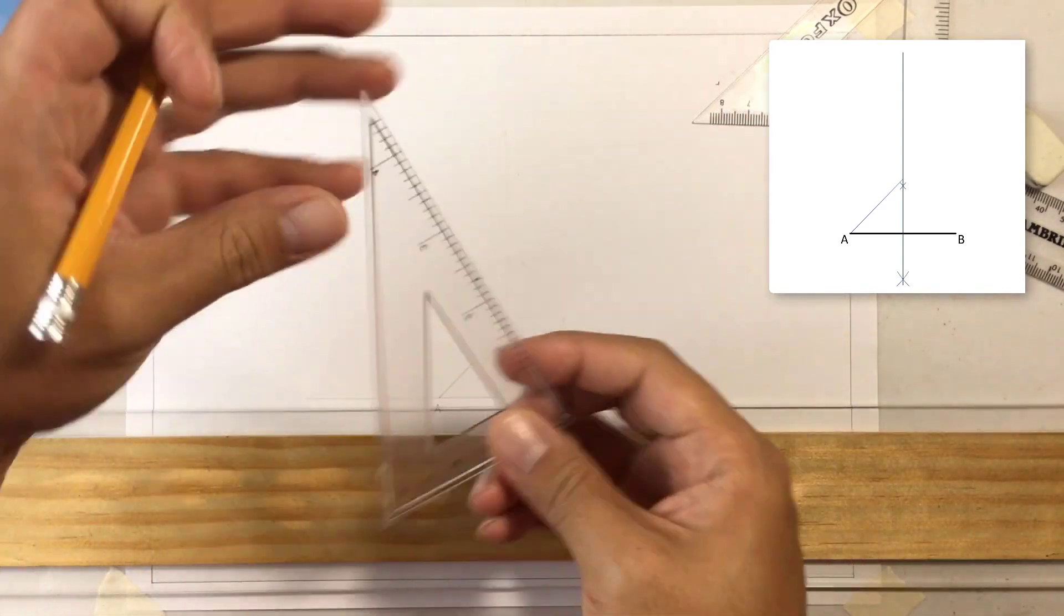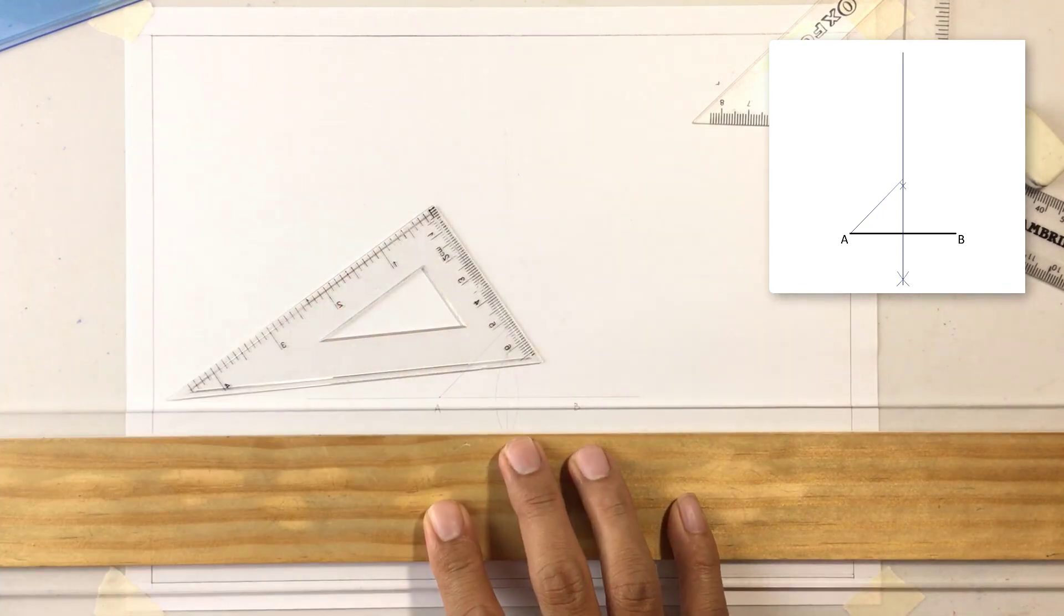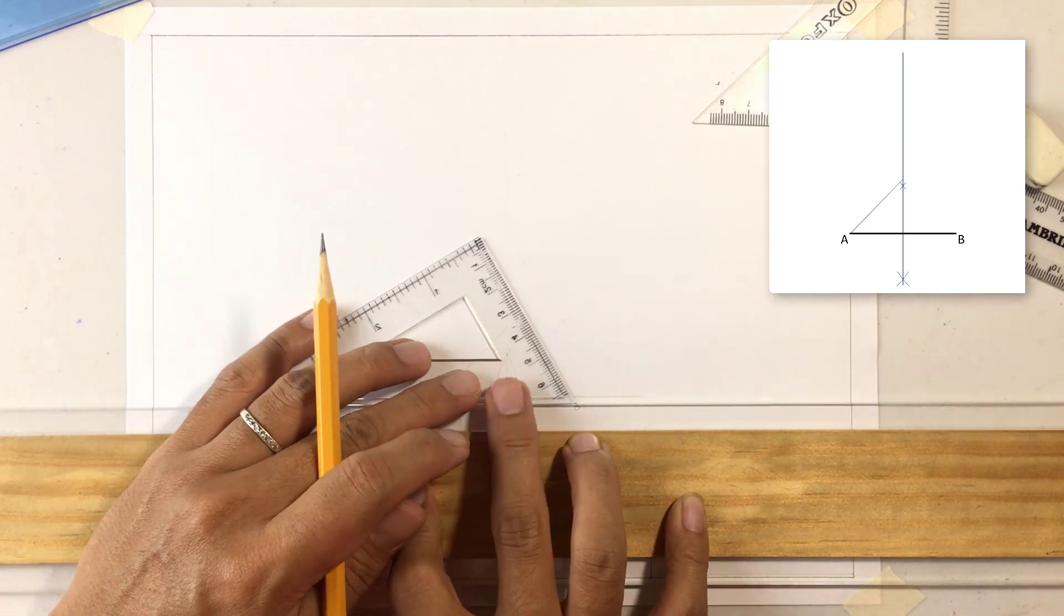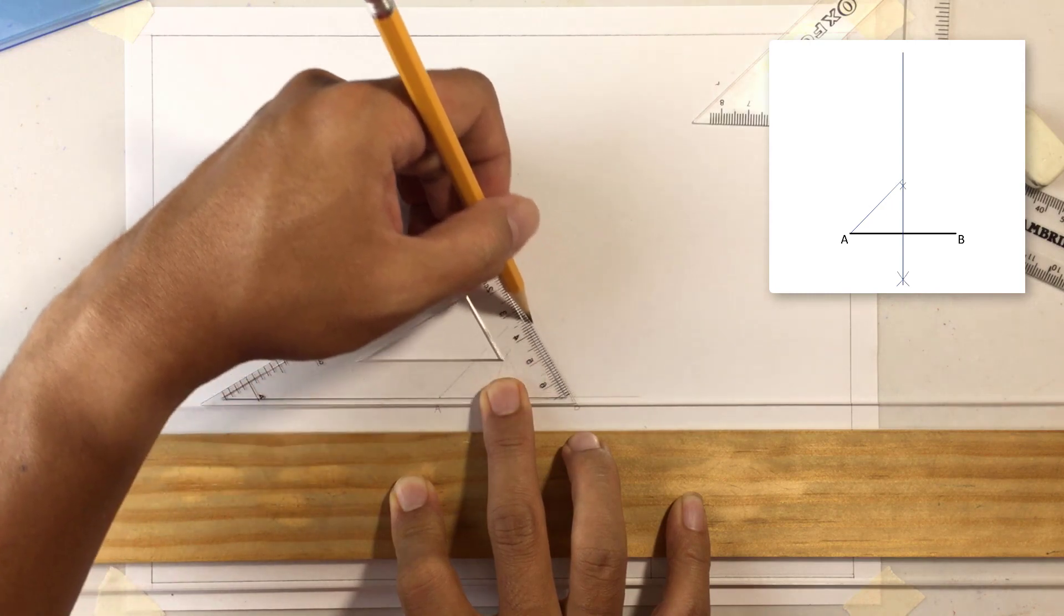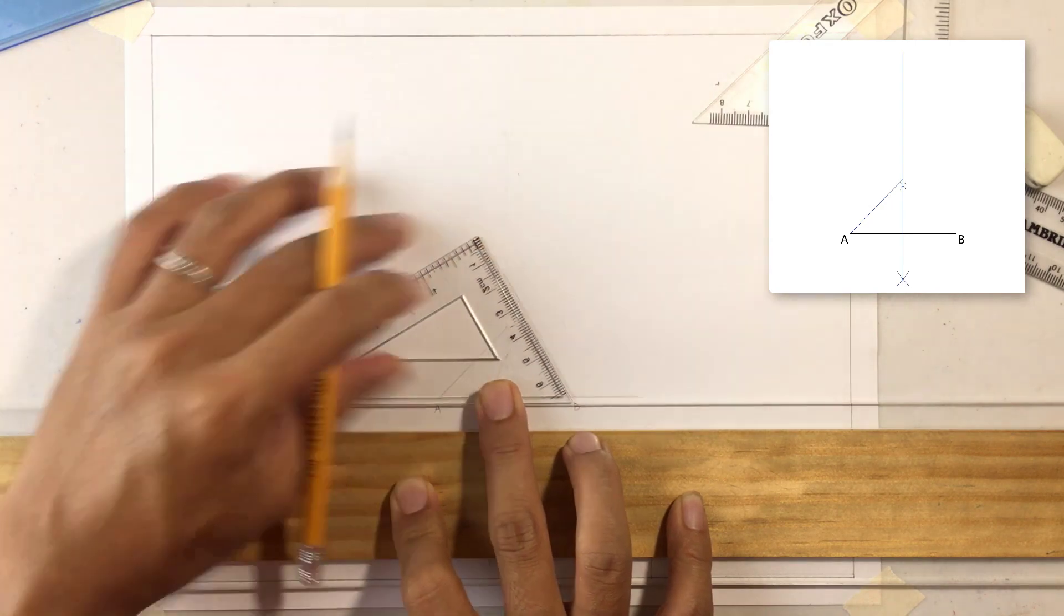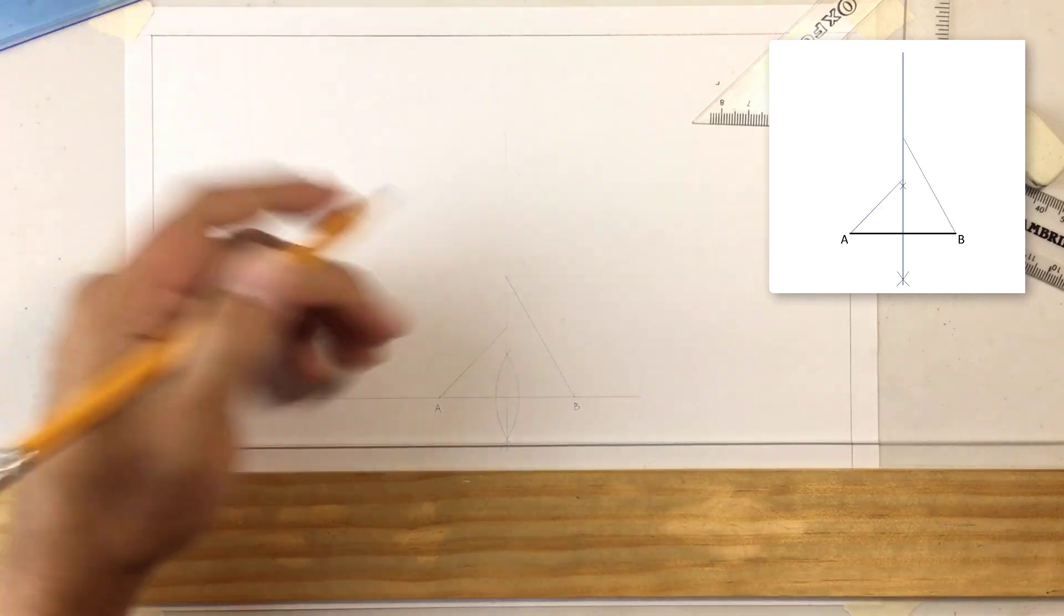Next, is your 60 degree triangle and then place it on B. You line it up on B and then draw the line, the 60 degree angle and then make sure that that line will intersect the bisector.